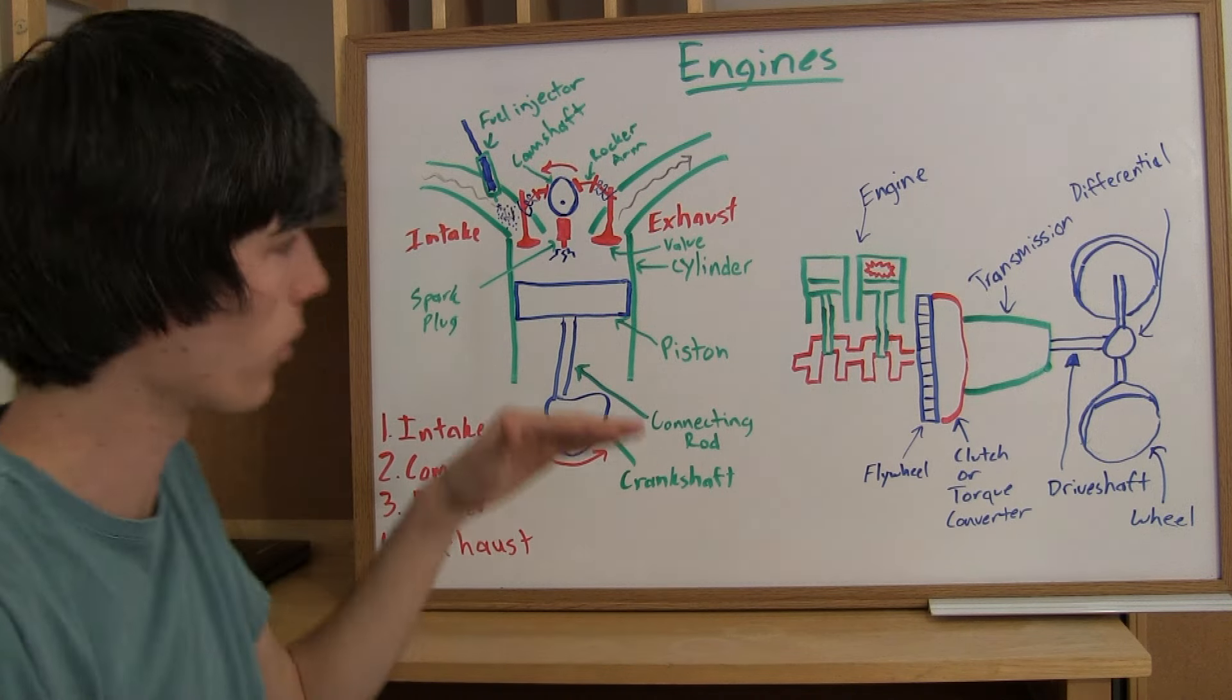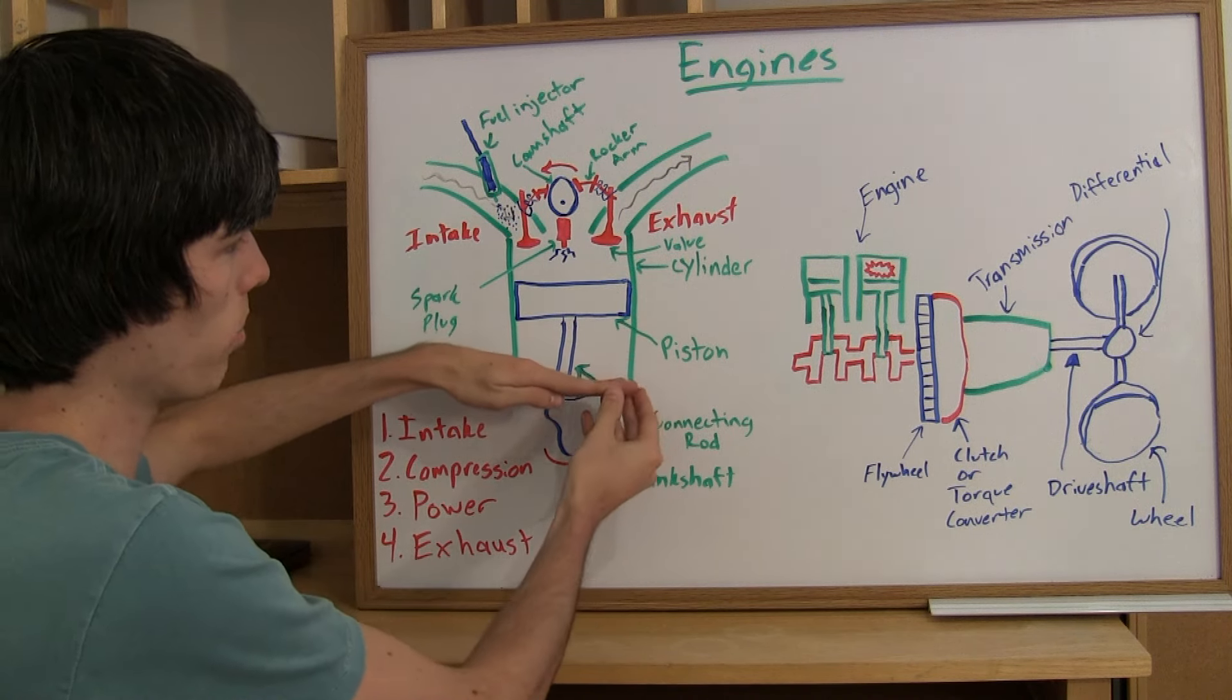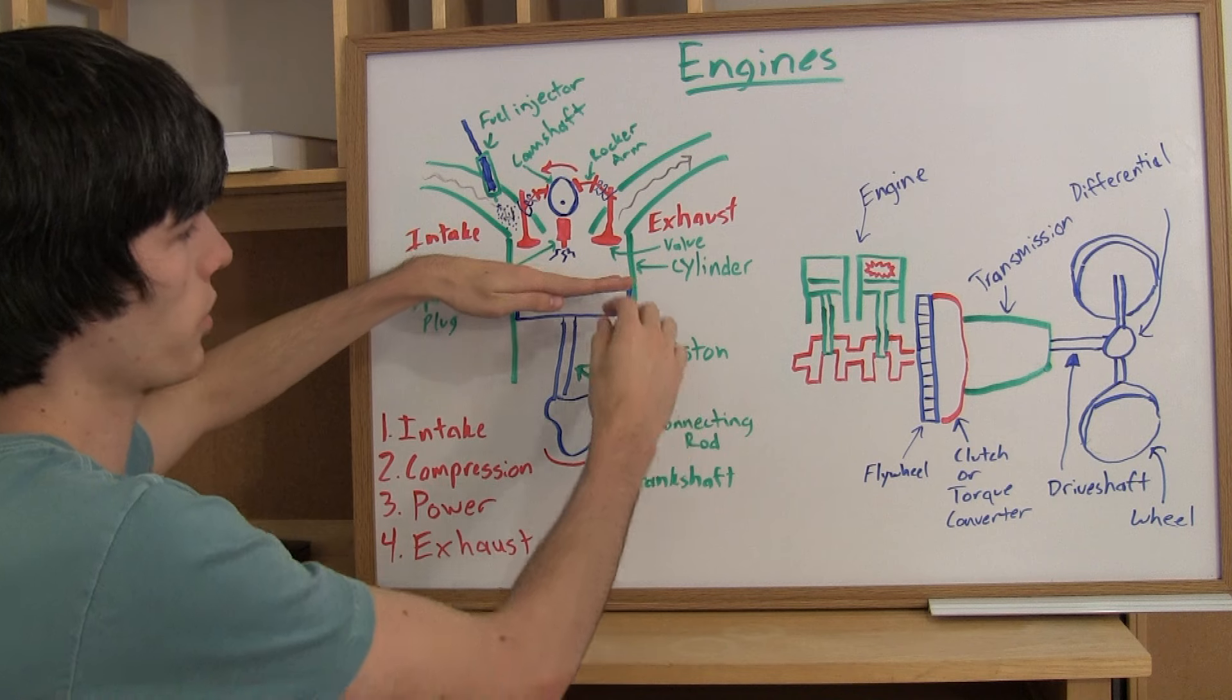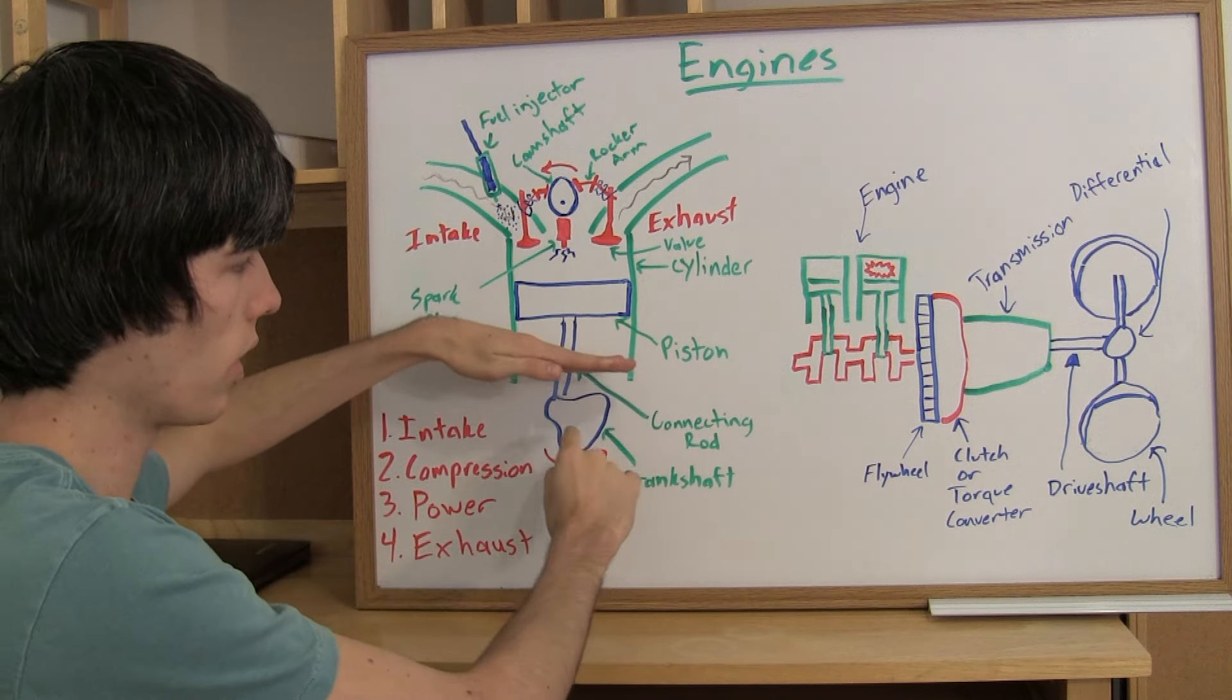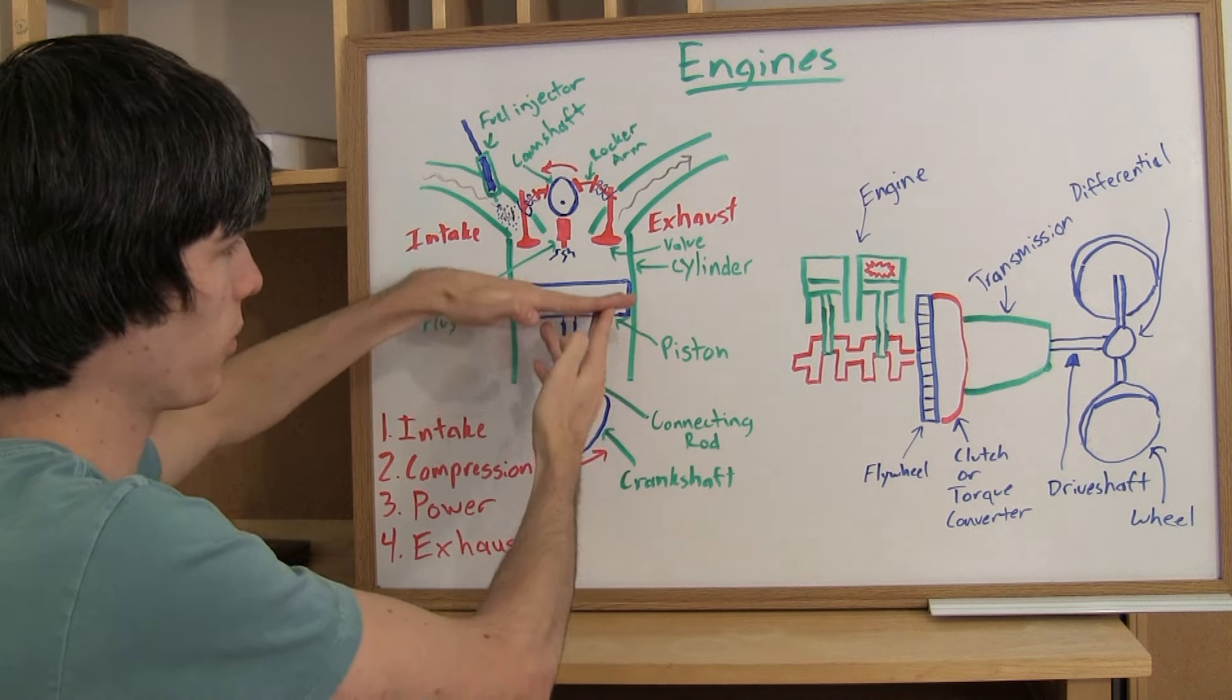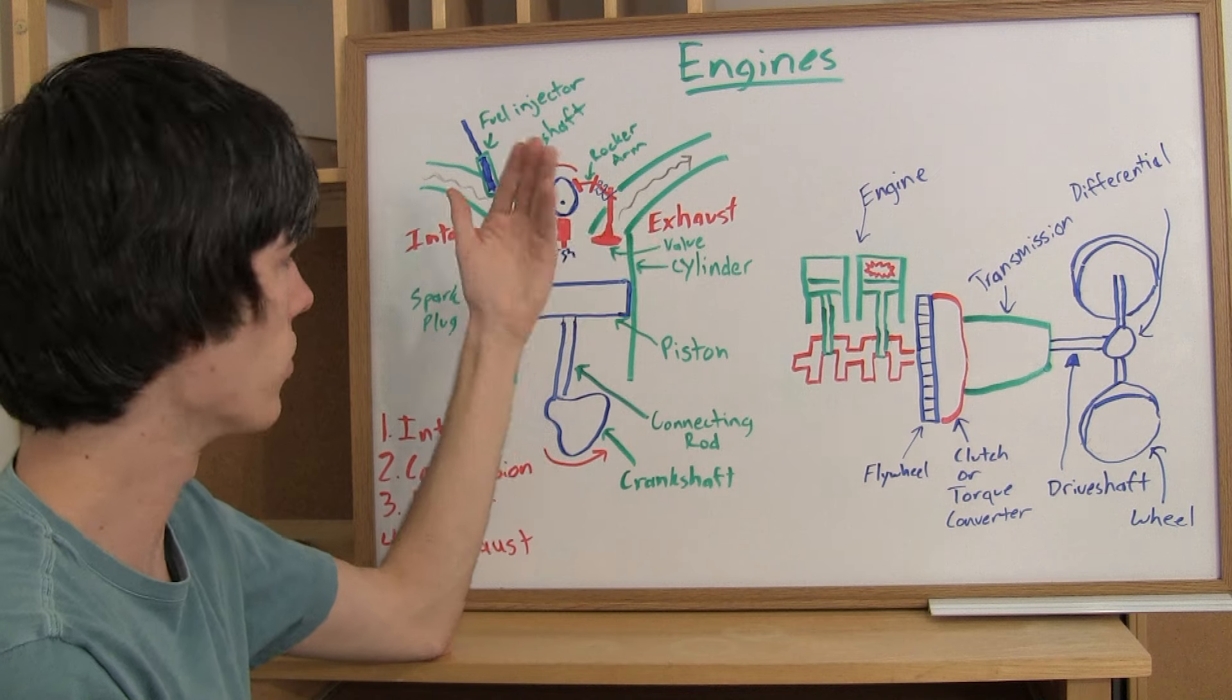So once again let's just go through those real quickly. Intake. You're pulling in the air and the fuel. That piston moves down. Compression. You're just squeezing all that air and fuel mixture into a very small space. Power stroke. You ignite that air fuel mixture and it pushes the piston down providing a torque on the crankshaft. And then exhaust. You want to get that air squeezed back out so the piston moves back up and pushes out the remaining exhaust. And then the cycle just repeats itself and goes on and on.